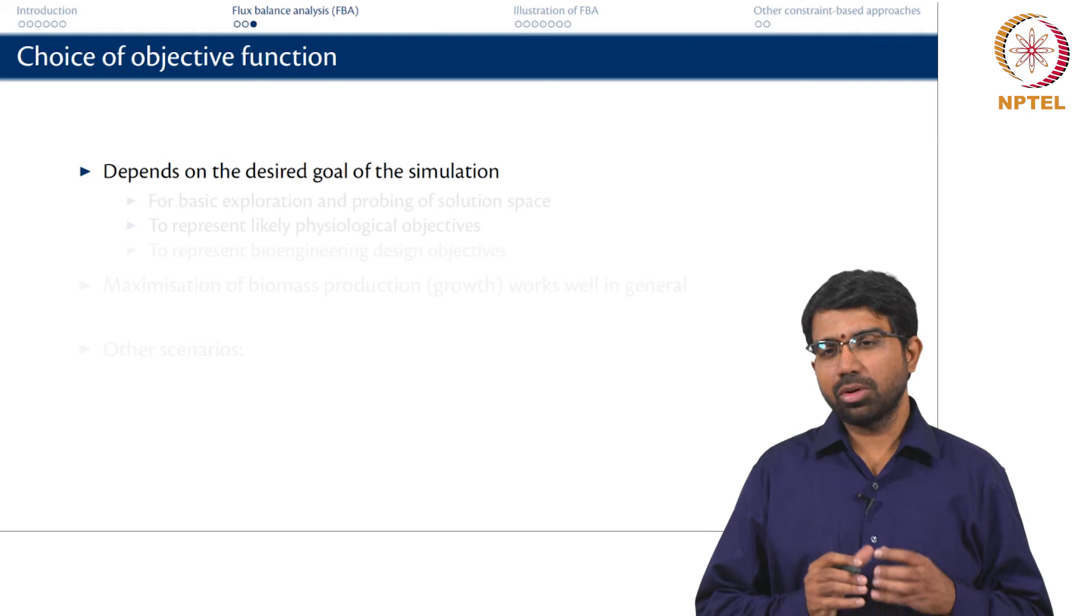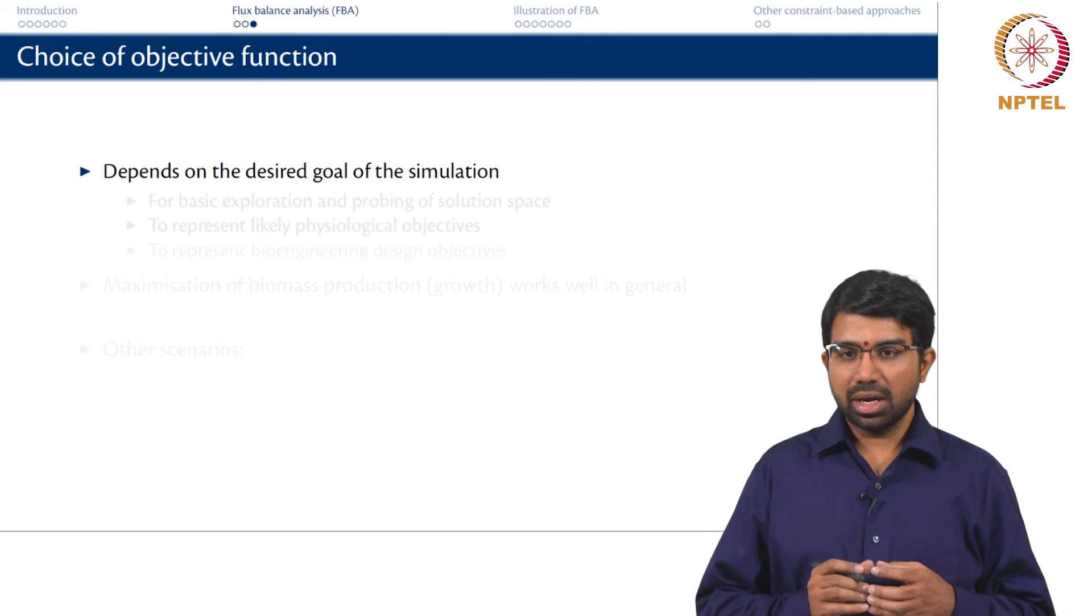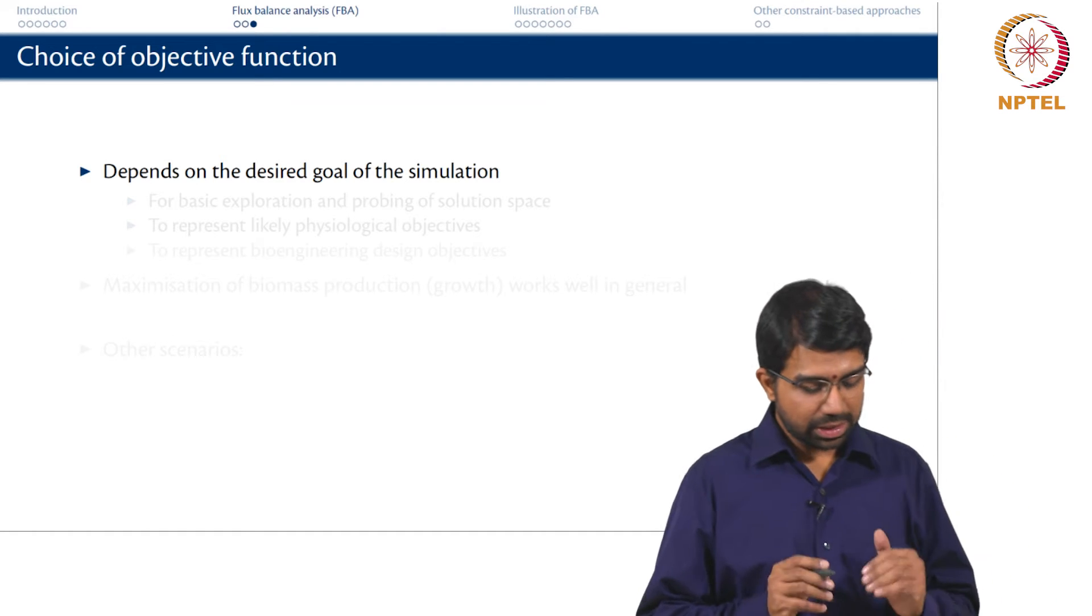How do you pick this objective function? In your school problem of chairs and tables, the objective function is very clear. You wanted to maximize the profit of the industry or factory. In this case, what is the objective function that you pick and this is where I want you to have a more fundamental understanding of FBA.